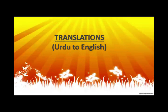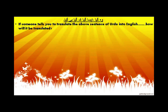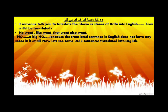Today's topic is translations from Urdu to English. You can see a sentence on your screen: 'Wo gaya, aisa gaya ke, gaya hi gaya.' Now if someone tells you to translate this Urdu sentence into English, how will it be translated? 'Wo gaya' becomes 'he went,' 'aisa gaya' becomes 'like went,' 'ke' becomes 'that,' and 'gaya hi gaya' becomes 'went also went.' So is this sentence making any sense? No — a big no — because the translated sentence in English does not have any sense in it at all.